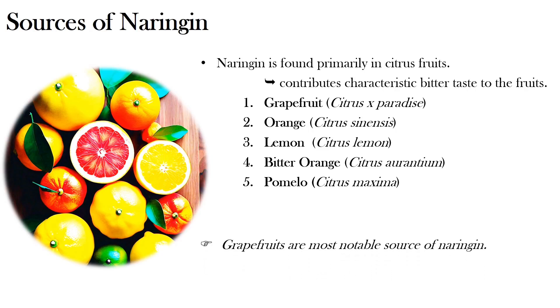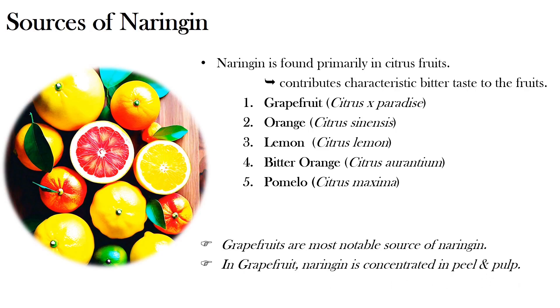In grapefruit, Naringenin is concentrated in the peel and pulp. This is about the sources of Naringenin.